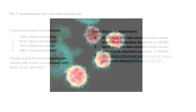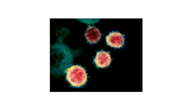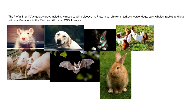All human coronaviruses are primary respiratory pathogens. Community-acquired coronaviruses cause about 14 percent of the common colds, predominantly in the winter. The number of animal coronaviruses also quickly grew at that time, including viruses that cause disease in rats, mice, chickens, turkeys, cattle, dogs, cats, whales, rabbits, and pigs — mostly with manifestations in the respiratory and GI tracts, but also seen in the central nervous system and the liver, similar to what we see in humans today.